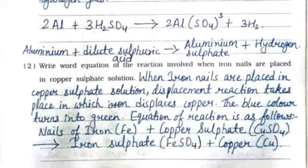Second: write the word equation for the reaction when iron nails are placed in copper sulfate solution. A displacement reaction takes place in which iron displaces copper; the blue color turns green. Equation: iron nails + copper sulfate → iron sulfate + copper.